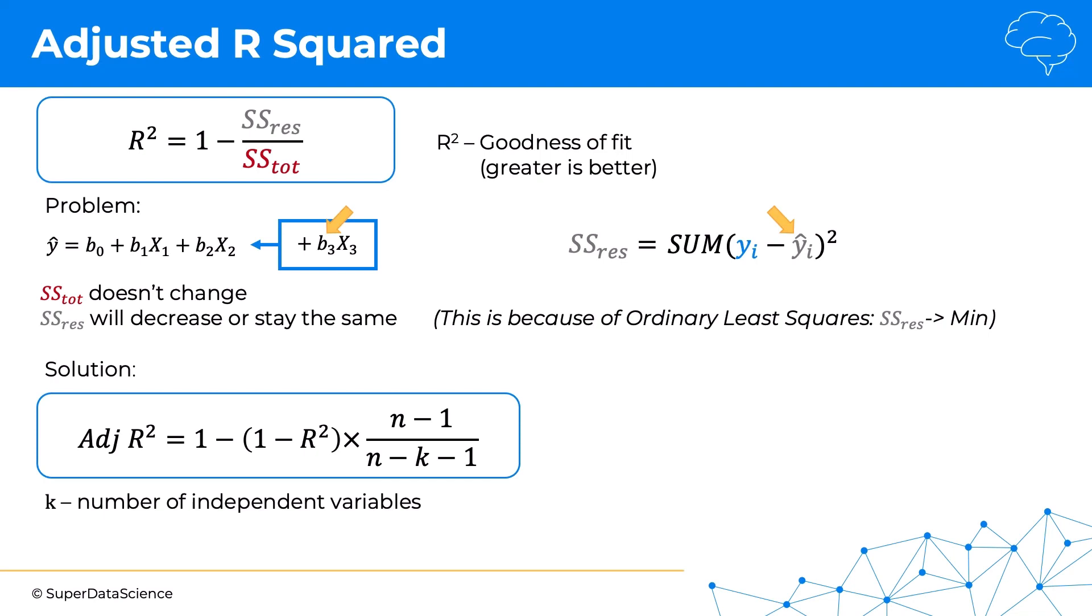So here there are a couple of new parameters. K is the number of independent variables that are in our model, and n is the sample size. And the important thing here is to look at k. So if k increases over here, then the denominator decreases. That means the whole ratio increases, and because it's being subtracted, that means adjusted r square decreases.